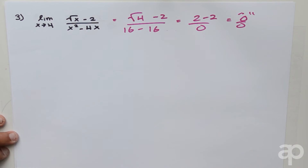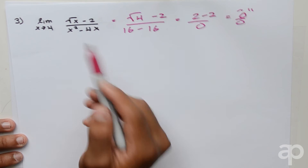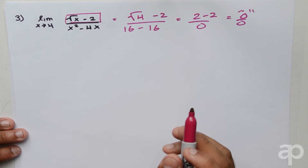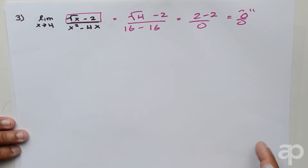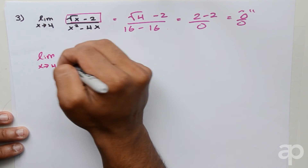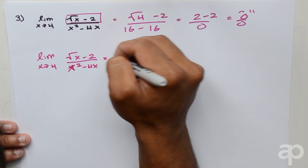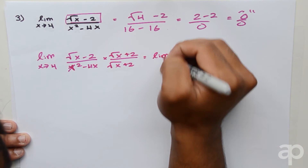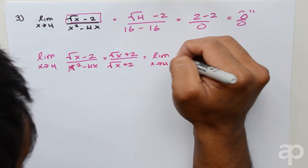In this case there's nothing straightforward to factor out, but we should notice that there is a square root of x minus 2 in the numerator, and we can multiply both the numerator and denominator by the conjugate, which is the square root of x plus 2. Doing this will turn the numerator into a cleaner expression.